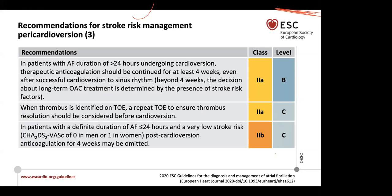Catheter ablation represents a class 1 indication as a first-line option in atrial fibrillation with heart failure with reduced ejection fraction, as well as a class 1 indication in those individuals who have failed drug therapy — specifically in paroxysmal or persistent atrial fibrillation.